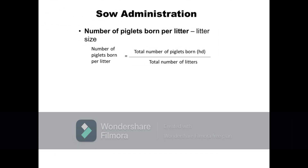Next is the number of piglets born per litter, which is also described as the average litter size or the number of piglets born in a farrowing time. It is calculated as total number of piglets divided by the total number of litters or farrowings. For example, if there were 120 piglets born from 12 litters, the average number of piglets born per litter is 10 piglets.